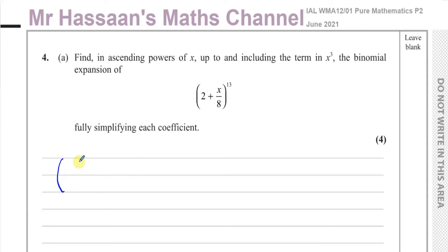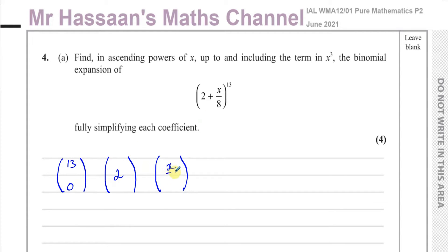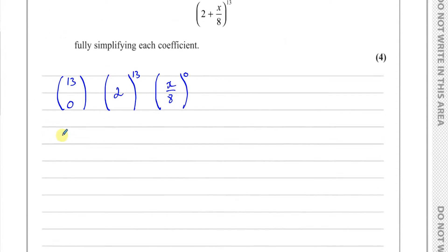We have basically three big brackets — that's how I always set it up. The main power is 13, so this is going to start with 13C0, then I have my 2 here and my x/8 here. I want the x in ascending powers, so I'll start this one from 0, therefore this one has to start from 13. These two numbers must always add up to 13.